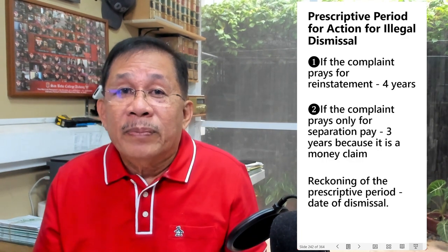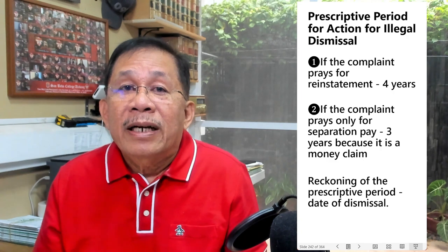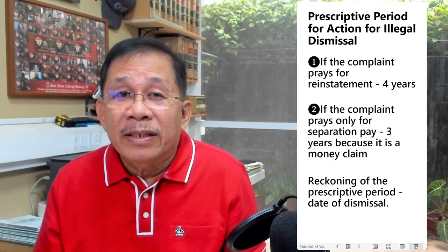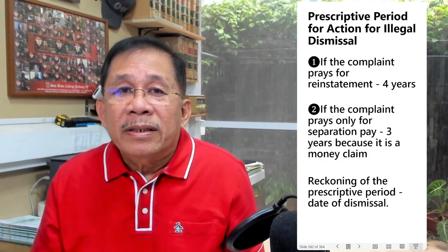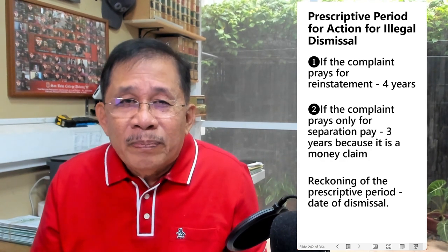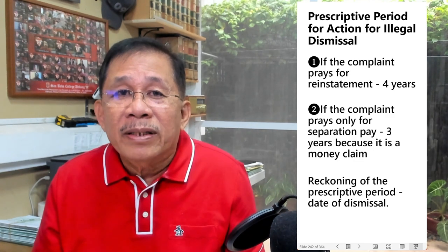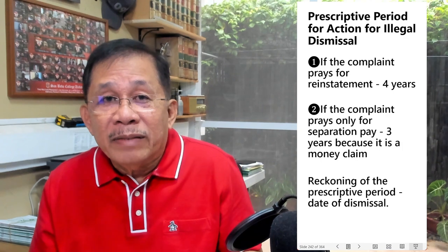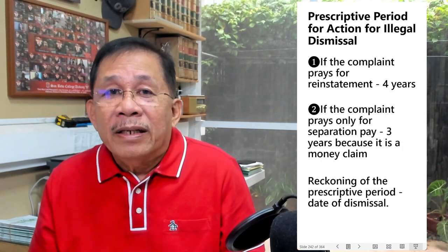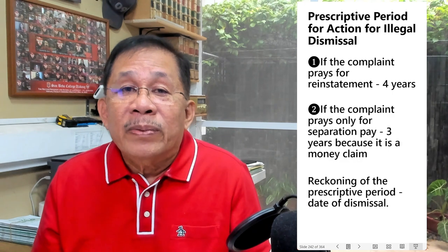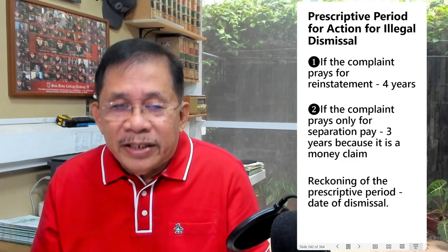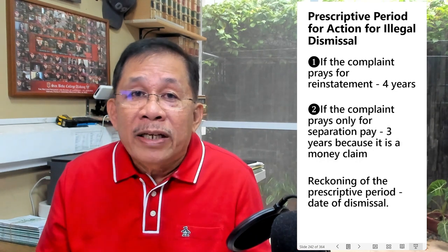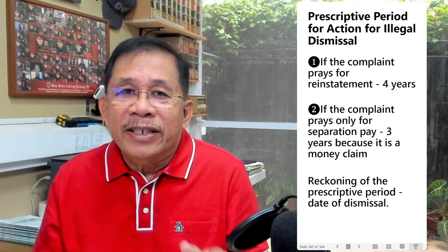To clarify: the prescriptive period discussed is for an action for illegal dismissal. If the question asks specifically about the prescriptive period for an action for reinstatement, the answer is four years. The key is to determine the prayer in the complaint — if the complaint prays for reinstatement, the prescriptive period is four years.